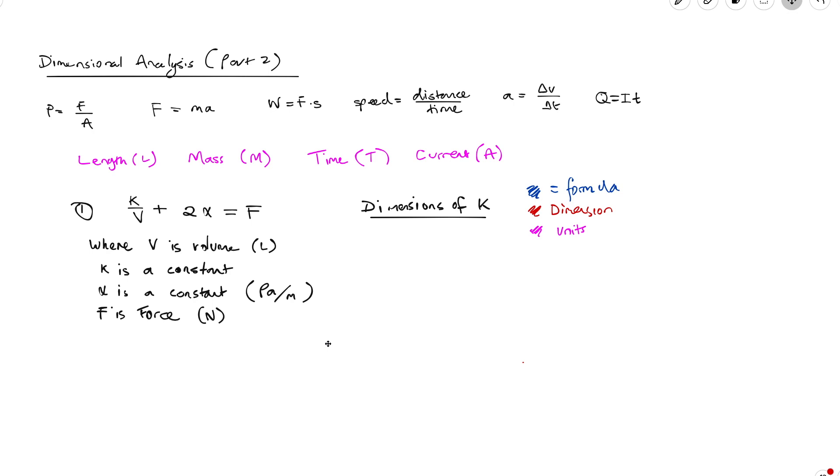In this one, what I wanted to do is look at what to do when you've got two terms that are actually being added or subtracted from each other, as well as when you've got combinations of terms in brackets that are being multiplied—effectively just more complex formula structure and how to still apply dimensional analysis to it.